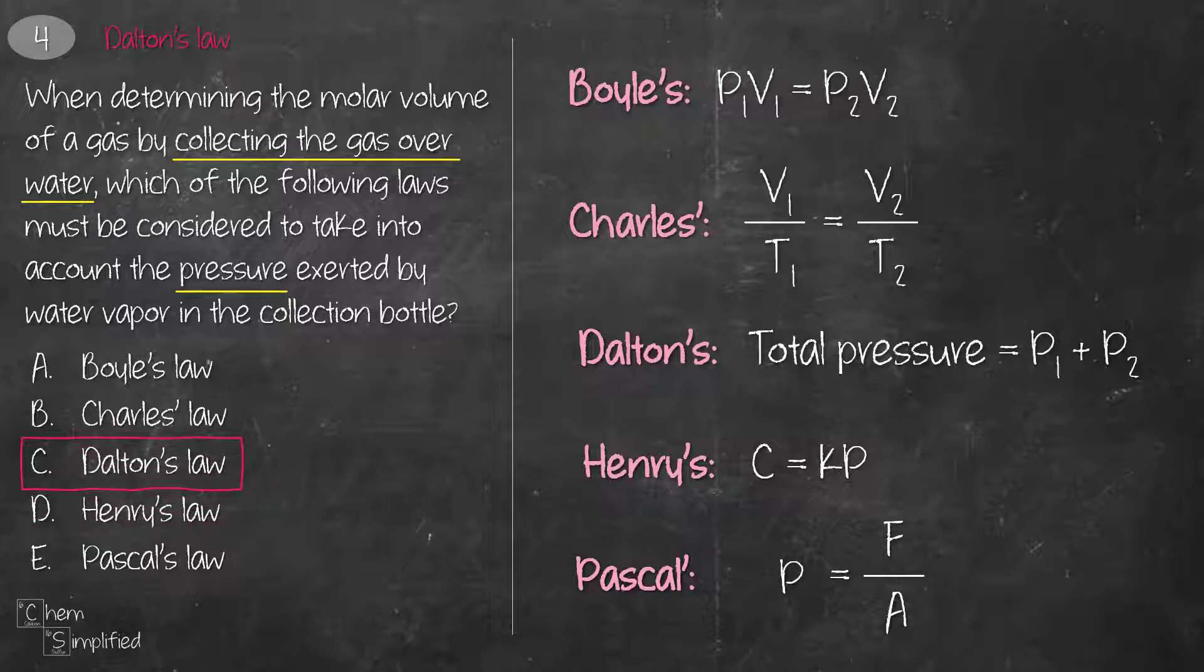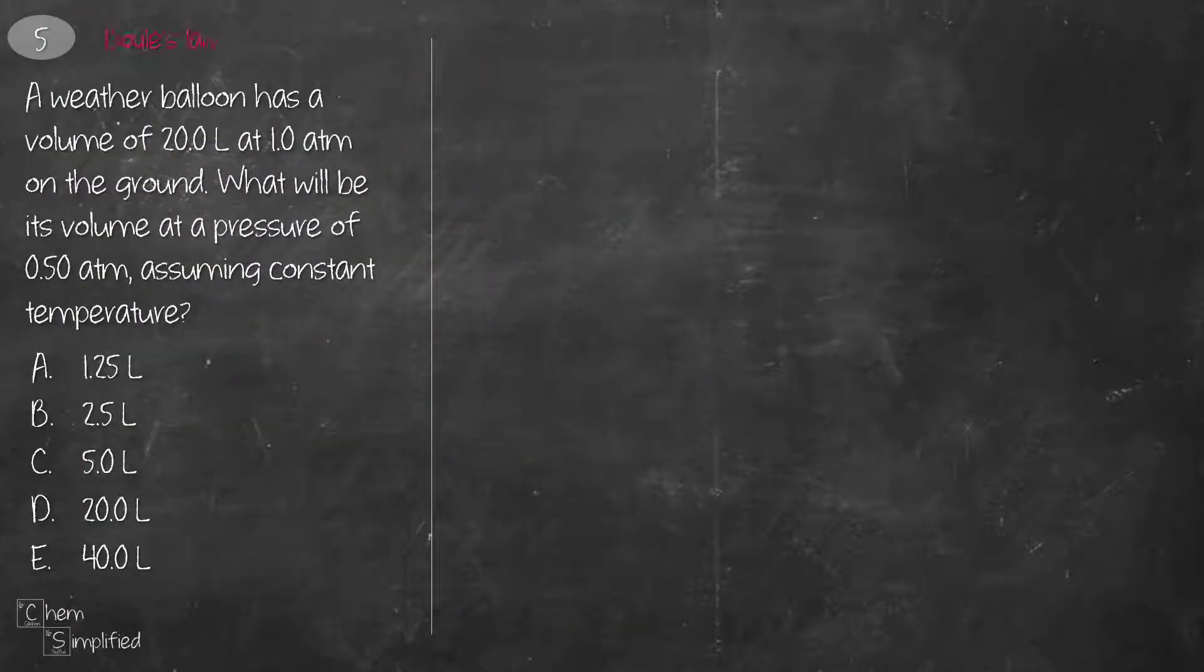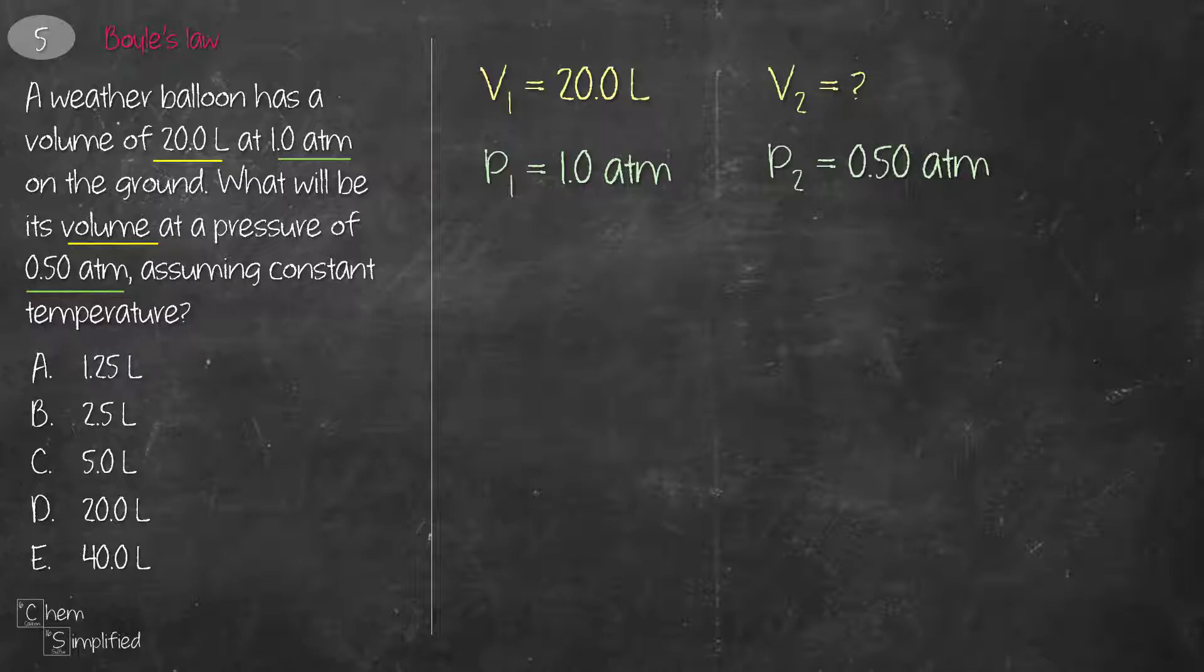This is a Boyle's law question because the question gives us the initial volume and pressure, and then it asks us to find the new volume at a new pressure, assuming constant temperature.